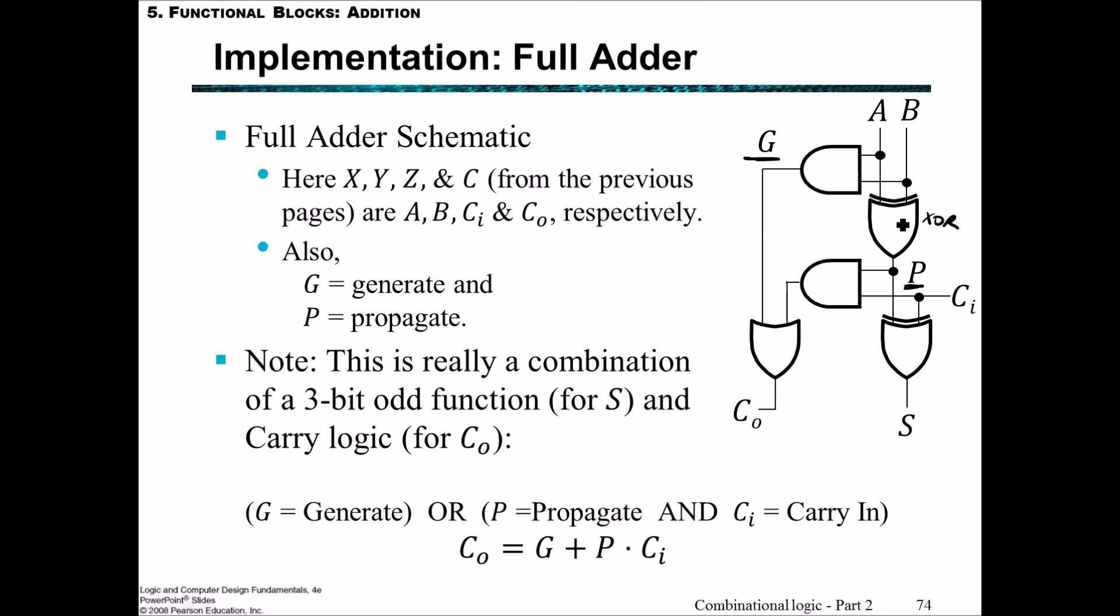Notice how we're using an XOR gate here, two AND gates, and one OR gate at the end. It's really just a combination of the three-bit odd function for S and the carry logic for CO. This can be rewritten more formally as CO = G + P·CI, which was similar to our XY + (X ⊕ Y)·Z before, but we're calling it CI now.